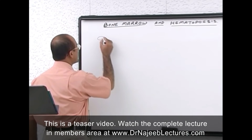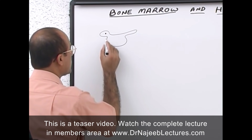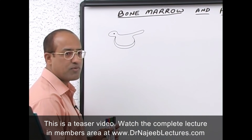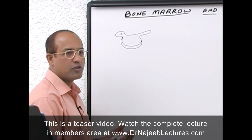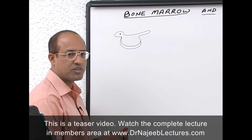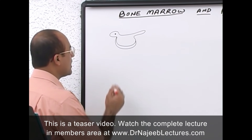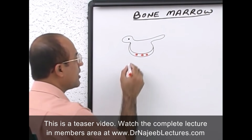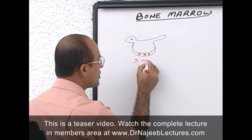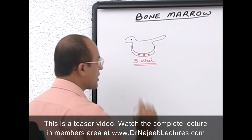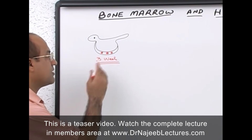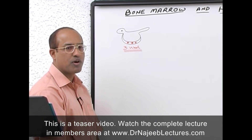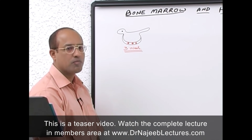This is the yolk sac. In fetal or rather embryonic life, very early life, the cells responsible for hematopoiesis first of all appear in the yolk sac around the third week of gestation. In the yolk sac, certain stem cells appear, and when they multiply, they lead to the formation of RBCs, WBCs, and platelets.